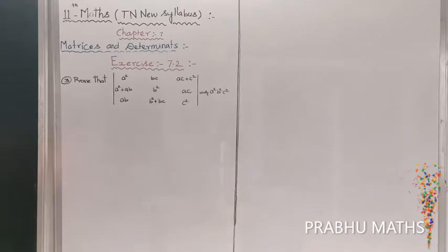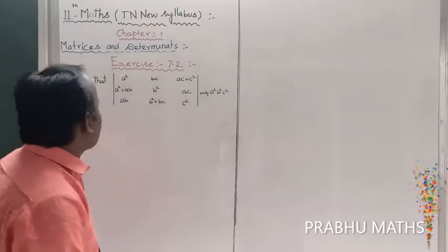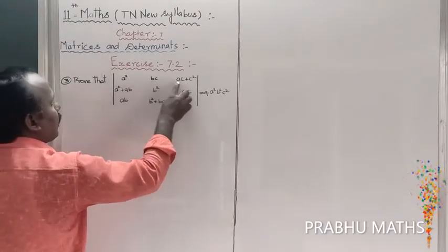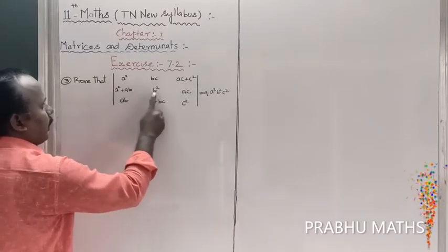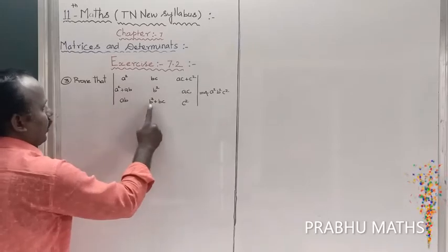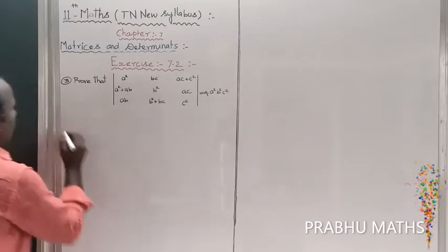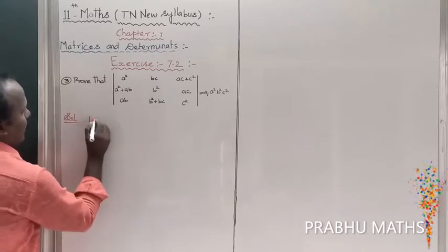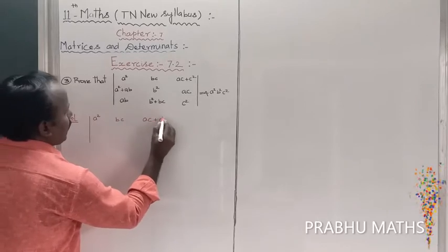Exercise 7.2, third sum: prove that the determinant is equal to 4 times a squared b squared c squared. The left-hand side of the determinant terms are: a squared, bc, ac plus c squared.